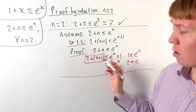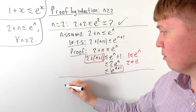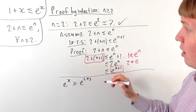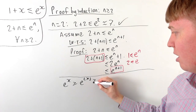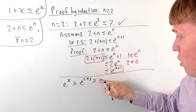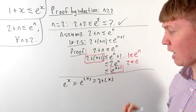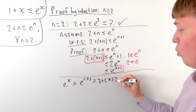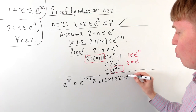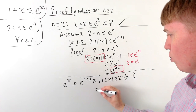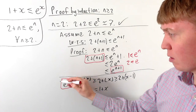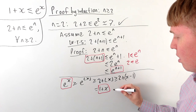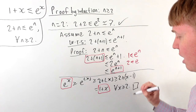All that's left is to extend to any real number x. For x greater than or equal to 2, e to the power of x is greater than or equal to e to the power of floor(x). Using our result, which is true for integers n greater than or equal to 2, this is greater than or equal to 2 plus floor(x). Since floor(x) is greater than or equal to x minus 1, this is greater than or equal to 2 plus x minus 1, which equals 1 plus x. So e to the x is greater than or equal to 1 plus x for all real x greater than or equal to 2.